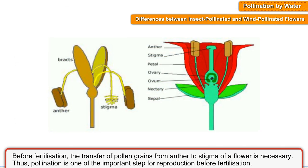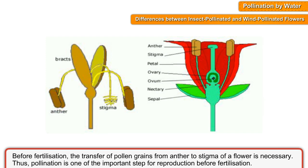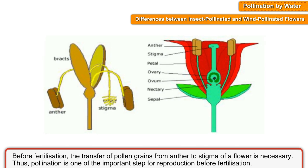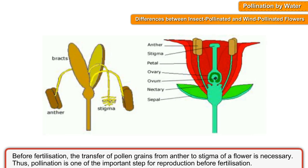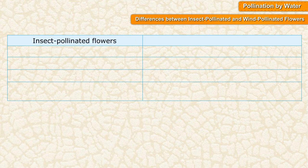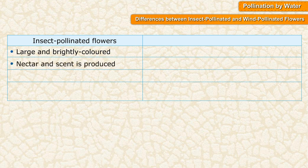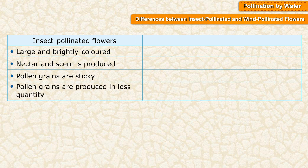Differences between insect-pollinated and wind-pollinated flowers. Insect-pollinated flowers are large and brightly colored. Nectar and scent are produced. Pollen grains are sticky and produced in less quantity.